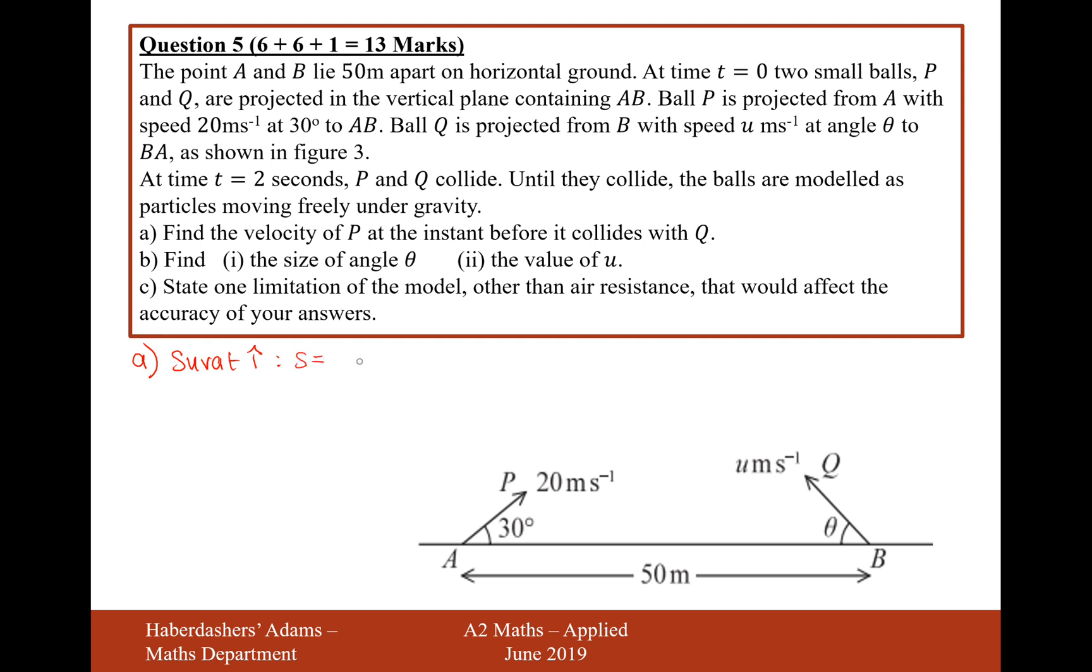S we're not interested in. U is going to be, let's resolve this vertical speed here, it's going to be 20 times sine 30. We all know that sine 30 is a half, so it's going to be 10. V is what we want to work out. A is going to be acceleration due to gravity, so that's going to be minus G. And T equals 2. We need a formula linking these things together then, not S. V equals U plus A T.